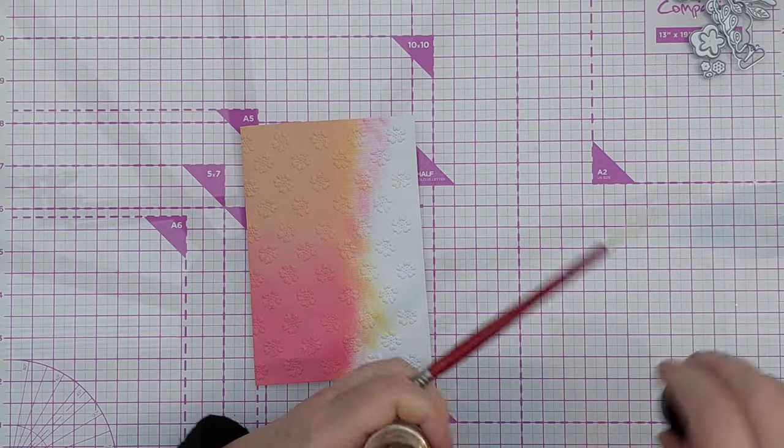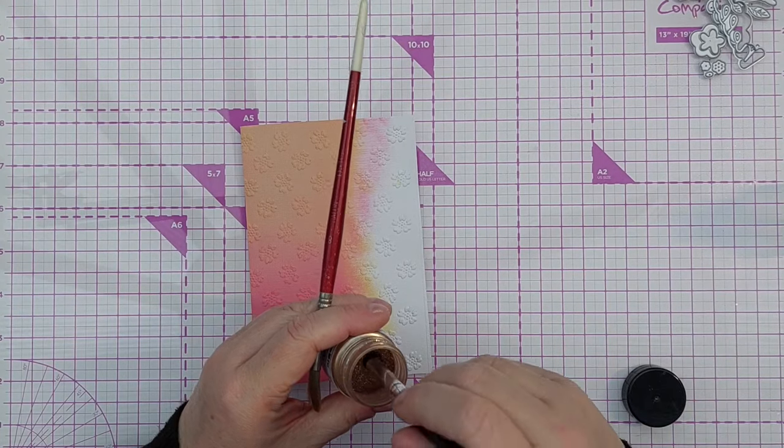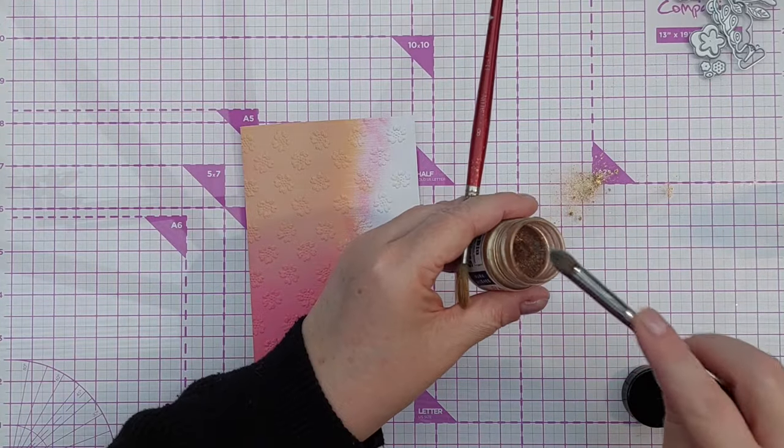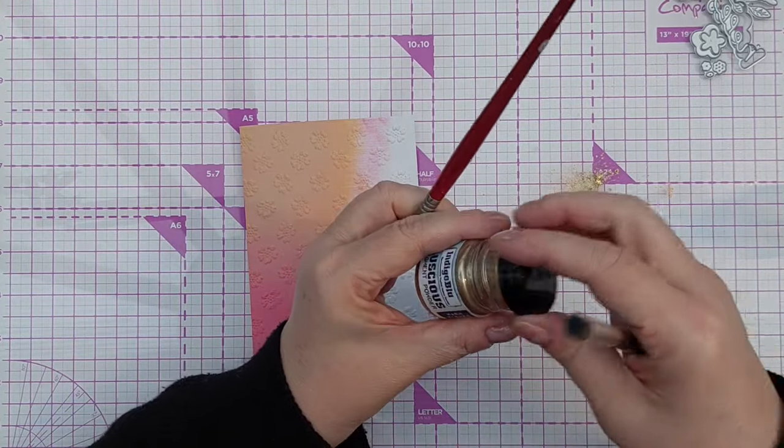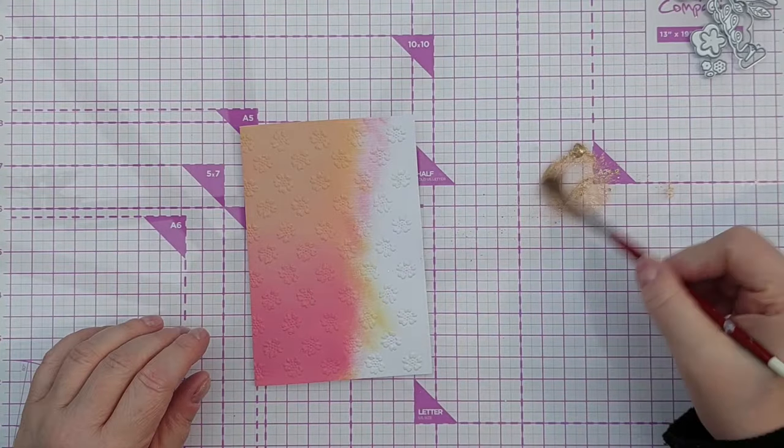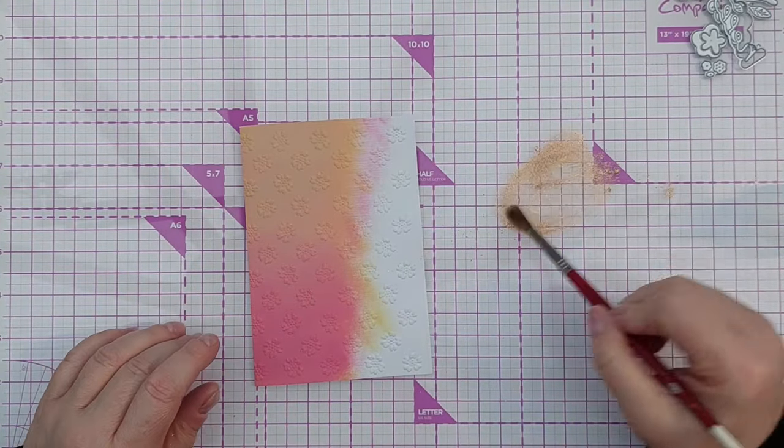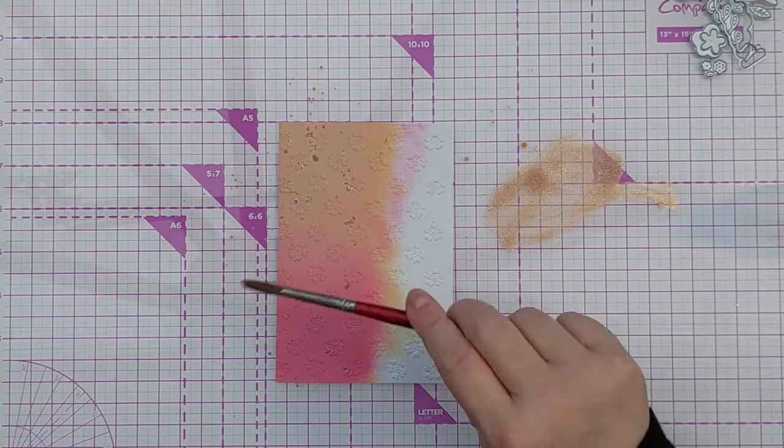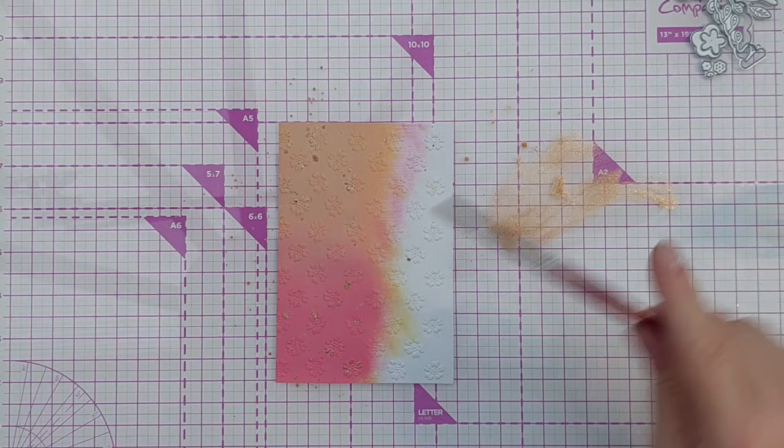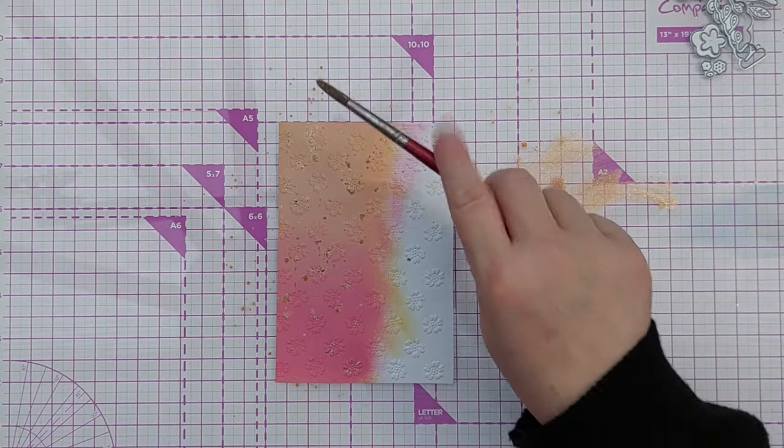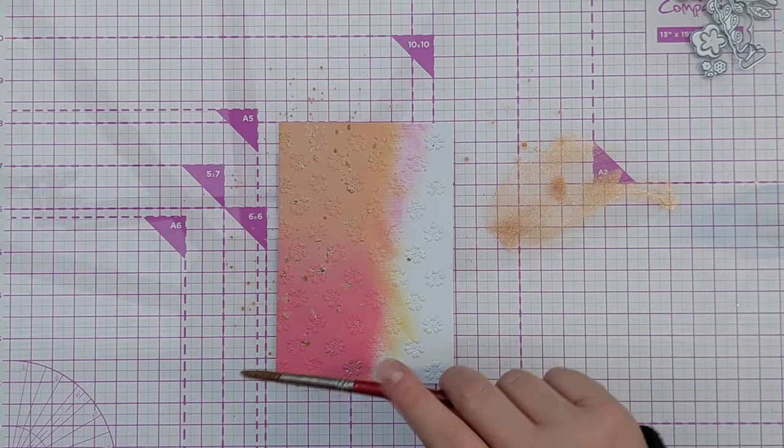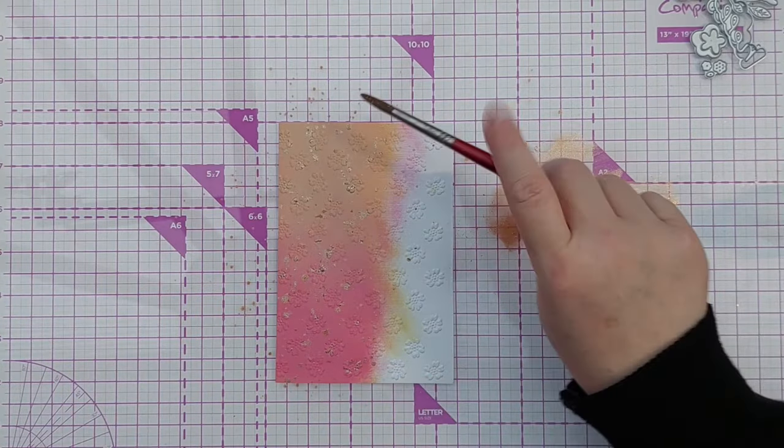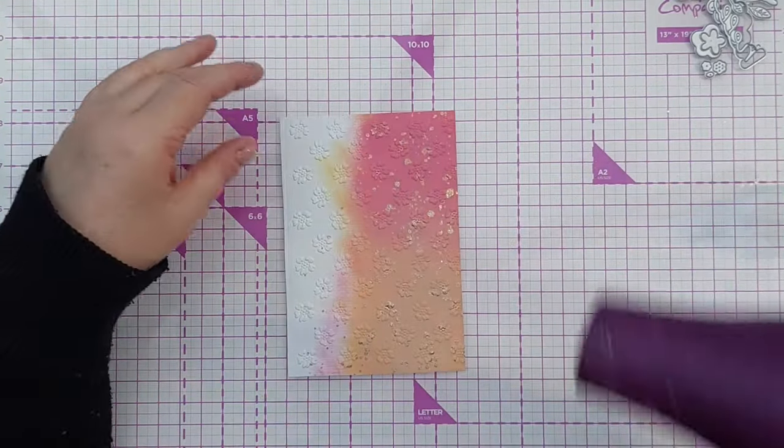So again before I stick anything down, I want to splatter on some gold. So I've got a bit of water on my palette here and I've got here Warm Wishes Luscious Powder and I'm going to mix that with water and use that for splattering. And this cardstock is linen textured cardstock and it's really absorbent, so it sucks the liquid in straight away and leaves the gold sitting on top. It's very pretty. I'm just going to give that a blast with my hair dryer.